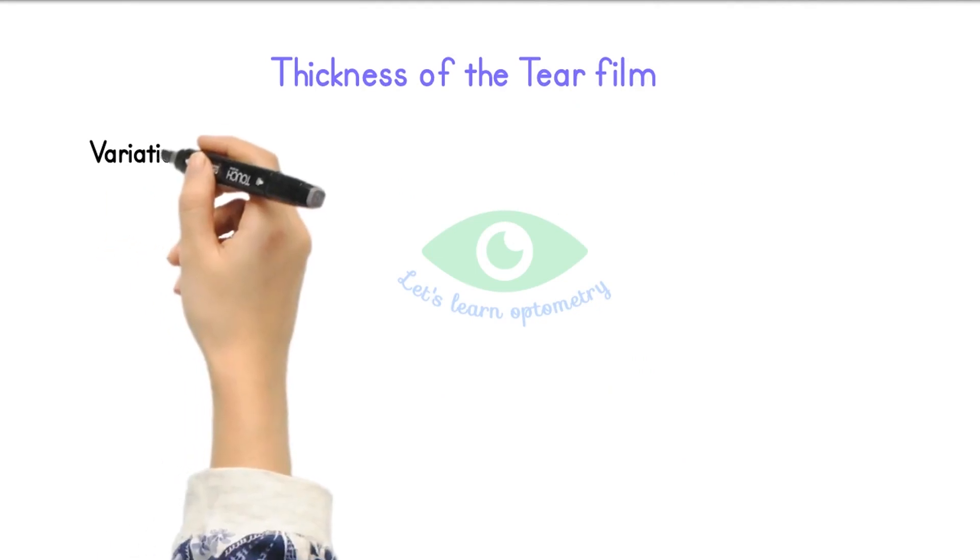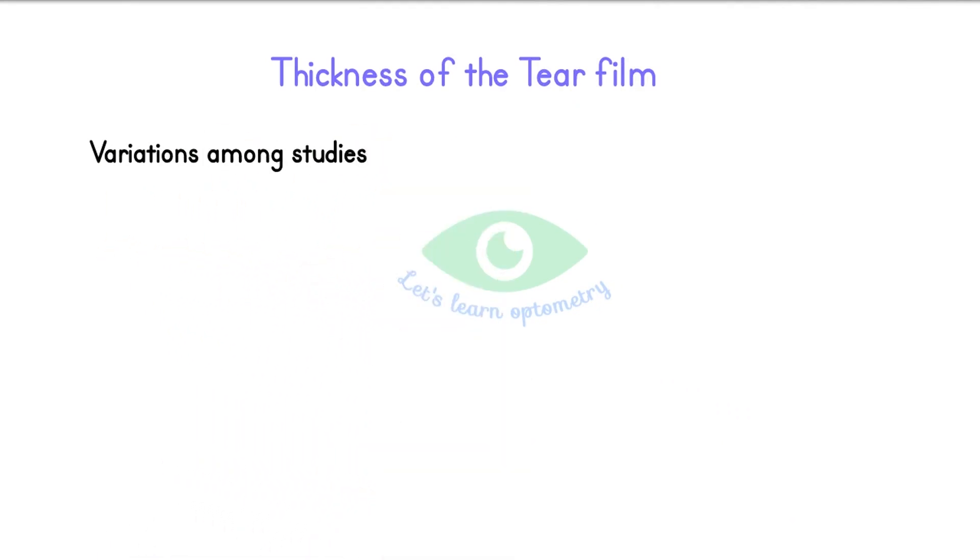Regarding thickness, there are significant variations among different studies, with the average value being 7 to 10 microns thick, with the aqueous layer accounting for 90% of the total thickness of the tear film.